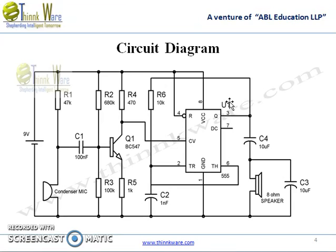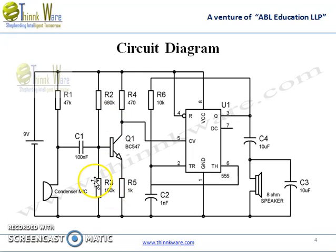Resistor R1 is used for biasing of the condenser mic, and resistors R2 and R3 are present to provide proper biasing to the transistor. We can test this circuit by blowing some air from our mouth towards the mic. The speaker will generate sound accordingly.